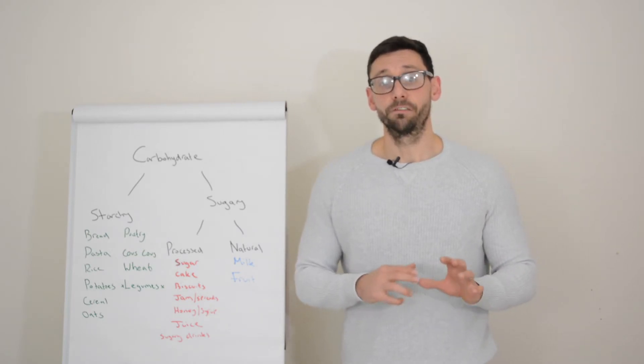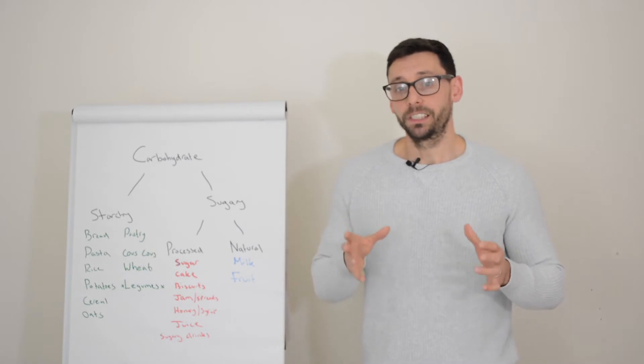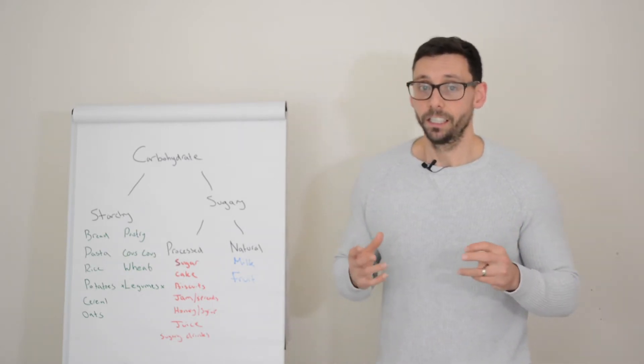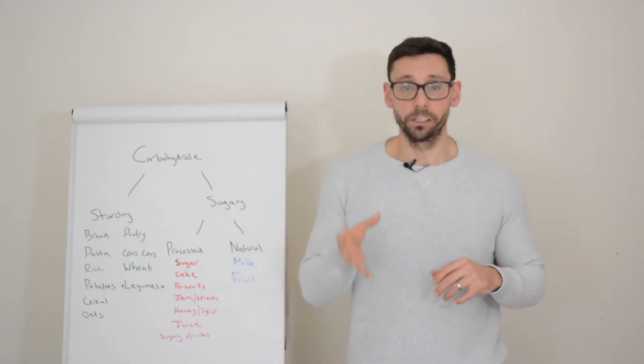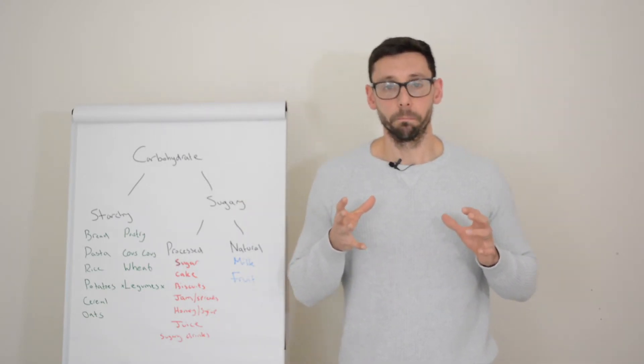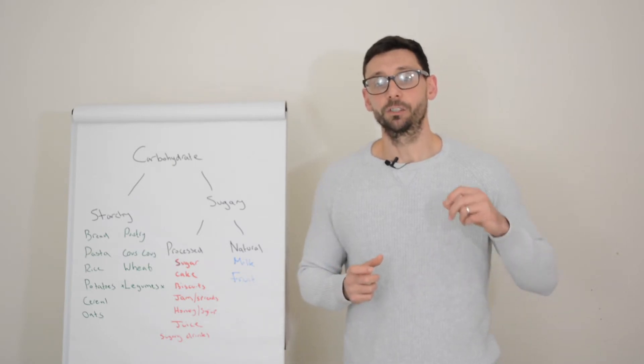So really what we're looking at today is fat, protein, and carbohydrate. Carbohydrates is really the main macronutrient that we're concerned about with type 1 diabetes because it is these foods that affect your blood glucose levels the most and therefore these are the foods that we need to start considering some rapid insulin for.